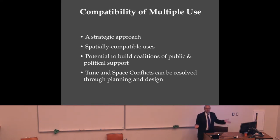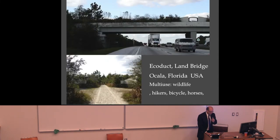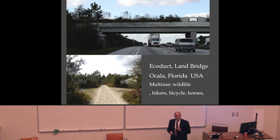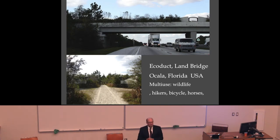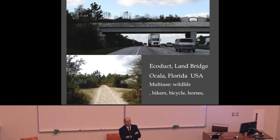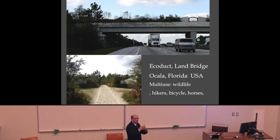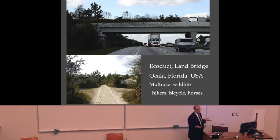Here's an example from Florida — an ecoduct, an overpass for wildlife across the highway. This one is also for horse riders, bicycles, and hikers, so you get a lot of people saying that's a good idea. This part of Florida is big horse country, so allowing equestrian use was important.